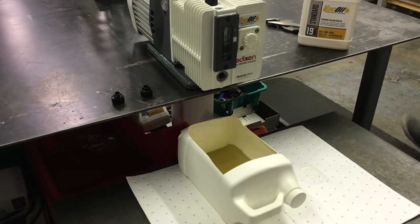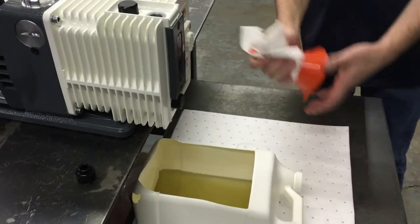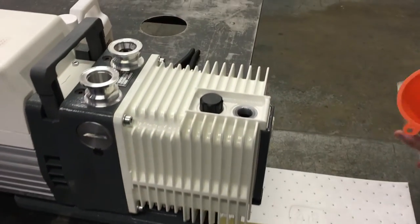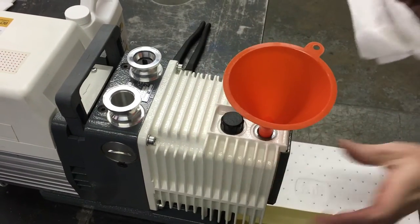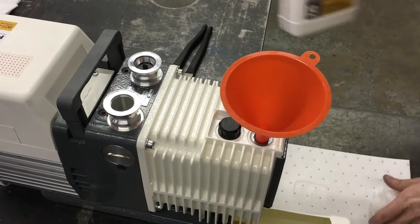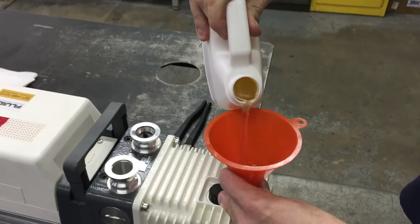Next, use a clean funnel to add new vacuum pump oil. Make sure to clean and dry the ports and plugs with a clean rag. Always use a high quality vacuum pump oil. I know this is obvious but replace the drain plug before you pour the oil back into the pump.